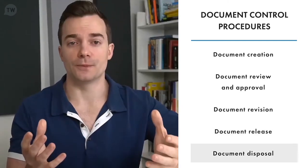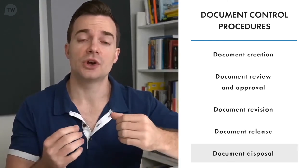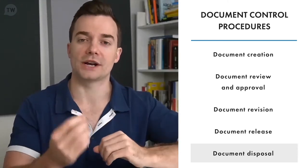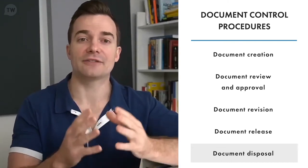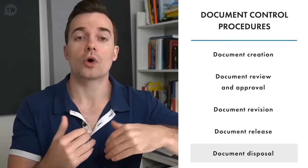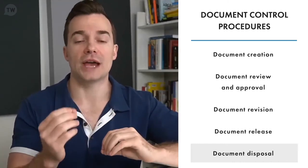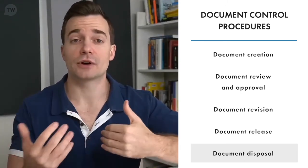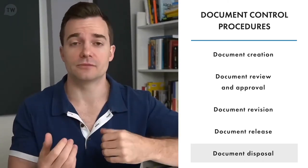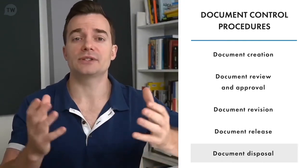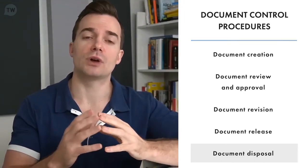Document disposal — different types of documents have different criteria that determine when they can be removed from the organization's records. For example, a policy can be deleted after it is superseded by a new policy, or employee data can be deleted a certain time after an employee has left the company. Some documents and data must be maintained for a certain period to comply with laws and regulations. The document disposal procedure defines the relevant criteria for the various types of documents.